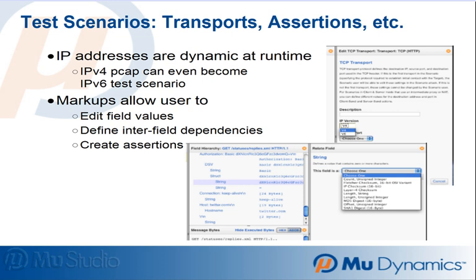An assertion is a simple conditional statement like: after I sent X, I was expecting Y — did that happen? Mu's default assertion for a test scenario defines success when all steps of the interaction finish as expected. A failed assertion triggers the automatic fault isolation process.